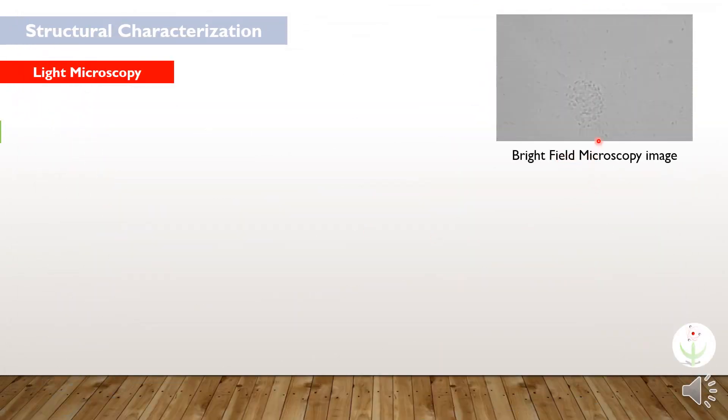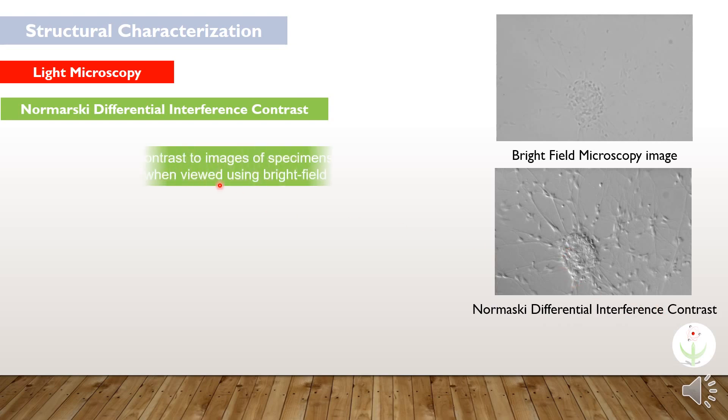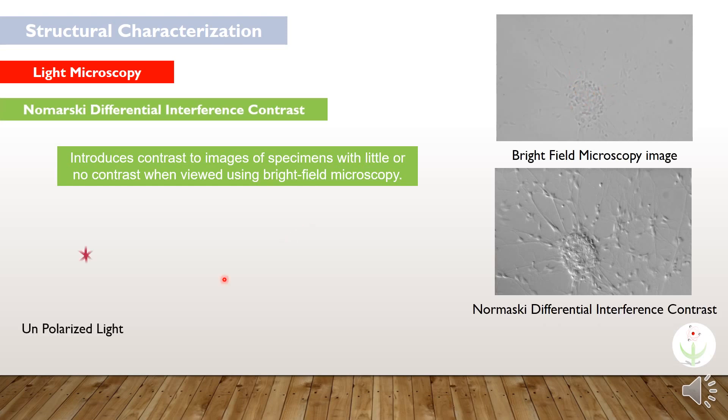This image is taken from bright field microscopy, but you can see the depth of field and resolution is not enough to reveal all of its features. This image is taken from Nomarski differential interference contrast microscopy. It is a technique which introduces the contrast to images of specimens with little or no contrast when viewed with bright field microscopy.